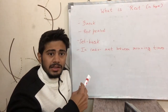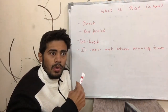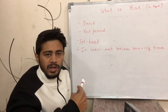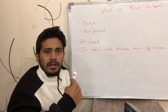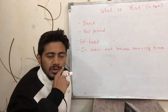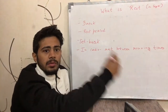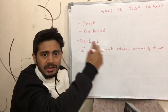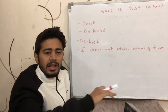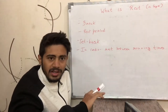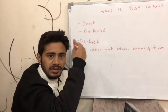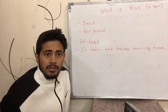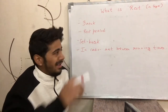So basically, rest is the amount of rest you take between two sets. Let's say you completed one set of an exercise and did 10 repetitions, then you put the dumbbell down. Now you are resting, and then you again start the next set. The period of time you were resting is called rest.